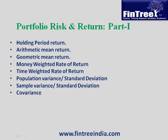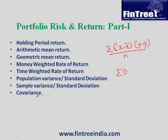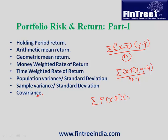For covariance, we can have historical or probability data. With historical data: population covariance = summation of (x − x-bar)(y − y-bar) divided by n; sample covariance uses n − 1 as the denominator. With probability data, the 1/n is replaced by probability, giving: summation of probability × (x − x-bar)(y − y-bar).